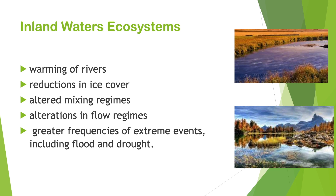Inland water ecosystems can be fresh or saline, within continental and island boundaries. The value of these ecosystems includes maintenance of hydrological balance, retention of nutrients and sediments, and provision of habitat for various flora and fauna. Impacts of climate change on inland water ecosystems include warming of rivers, reduction in ice cover, altered mixing regimes, alteration in flow regimes, and greater frequencies of extreme events including floods and droughts.